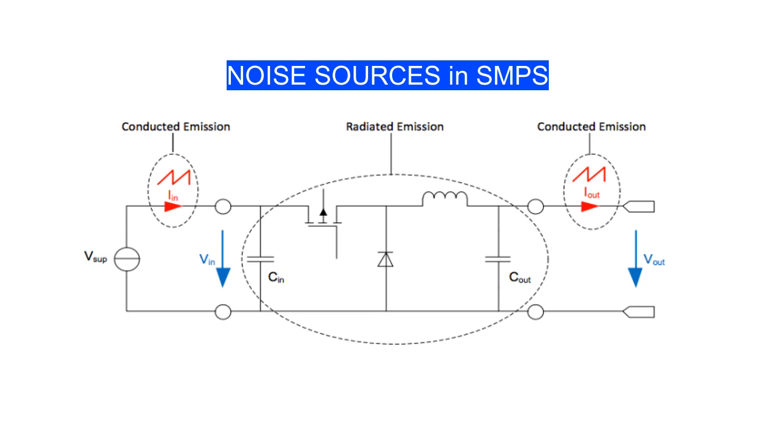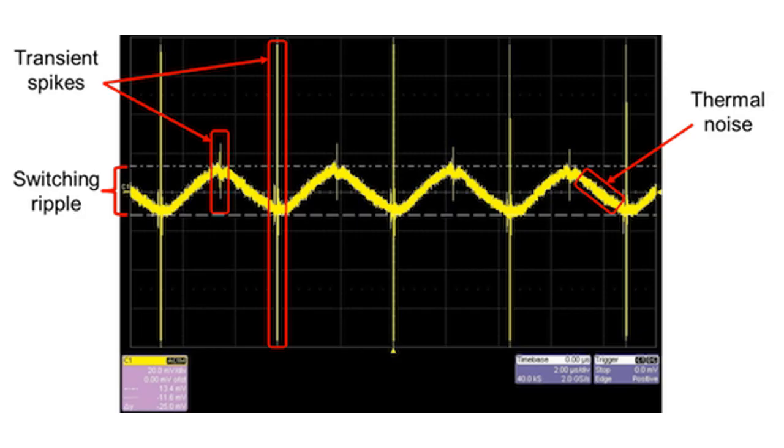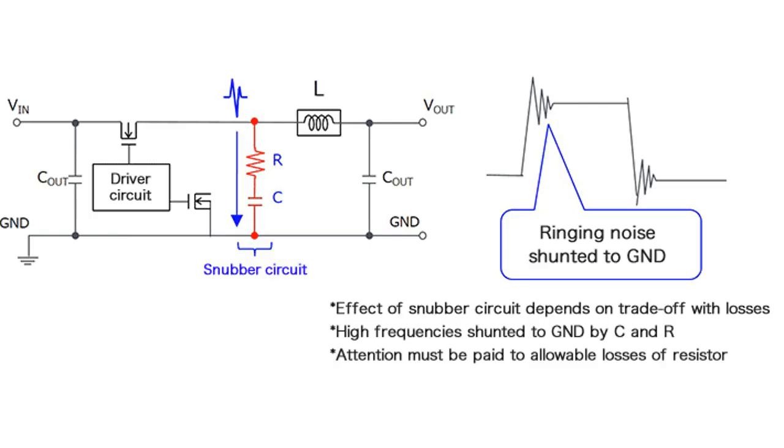DC to DC converters provide great efficiency for voltage regulation. However, they have an undeserved bad reputation when it comes to systems with sensitive signal paths because of the noise they can generate. On top of their output ripple noise, they also generate conducted or radiated electromagnetic interference. Solutions include using a boot resistor, snubber circuit, ferrite bead and feed through capacitors.